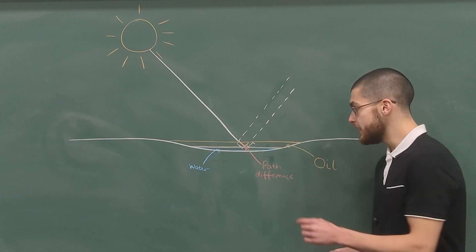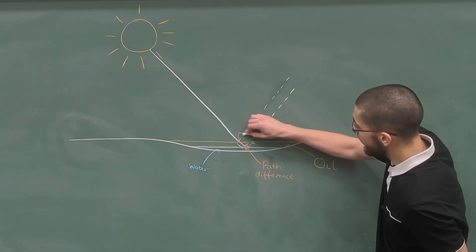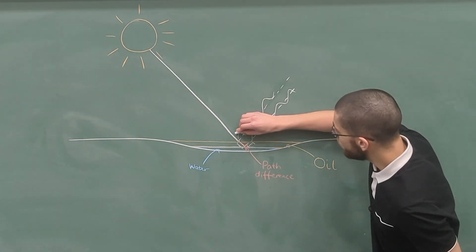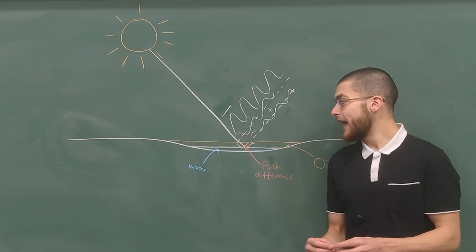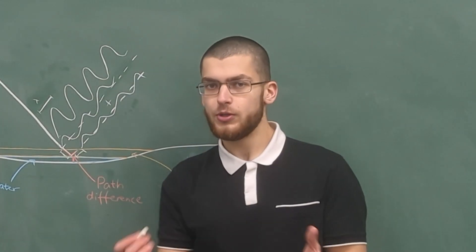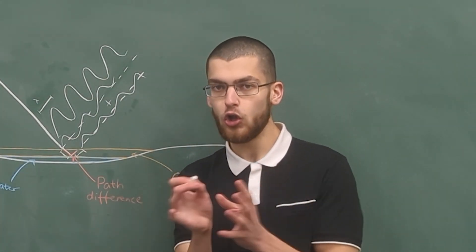This slight path difference means that once the waves join together, they are no longer in sync, which means that when they add together, they form a new wave of a different amplitude. The amplitude changes, but the wavelength remains the same. And as we know, the wavelength changes the color of the wave.